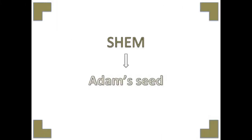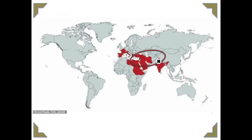We begin with the premise that from Shem descended Adam's seed, which is a biblical view elaborated on in other videos. Here is the main region from a world view that shows our focus area. We start at the ark location marked by the X, since from there all people initially originated. Mankind spread from there into the major hub we know today as the Middle East and Central Asia.